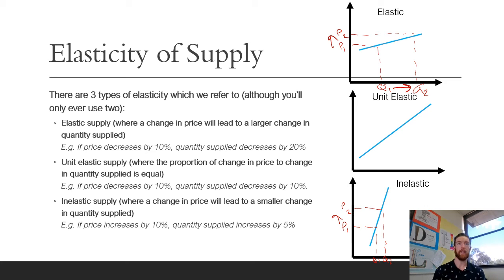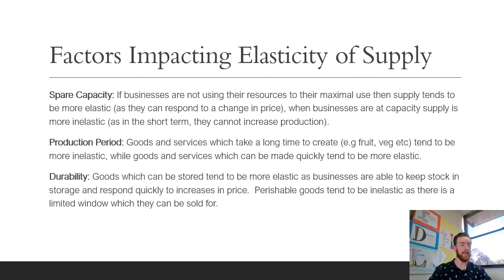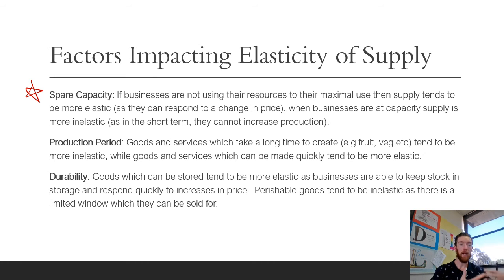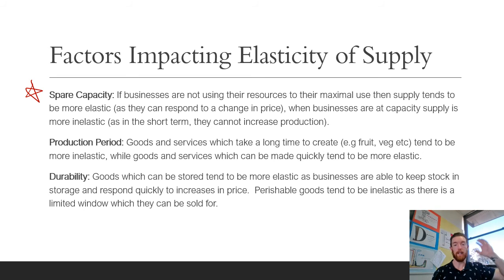Elastic supply tends to apply where suppliers can get more product out really quickly, while inelastic supply is where they can't respond quickly. The first factor is spare capacity — if businesses are not using their resources to their maximum potential, supply tends to be more elastic. If a business is only using 50% of its production line and the selling price goes up, they can suddenly use 100% to supply more. Whereas if businesses are working at full capacity, supply is more inelastic because in the short term they can't produce anymore.